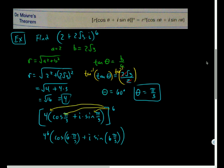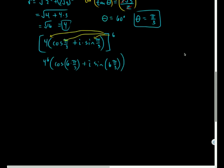So I'll end up having 4^6 times cosine of 6 times π/3 plus i times sine of 6 times π/3. Because I multiply each of the thetas by n and r to the n as well. So now we can simplify this. 4 to the 6th is 4096.